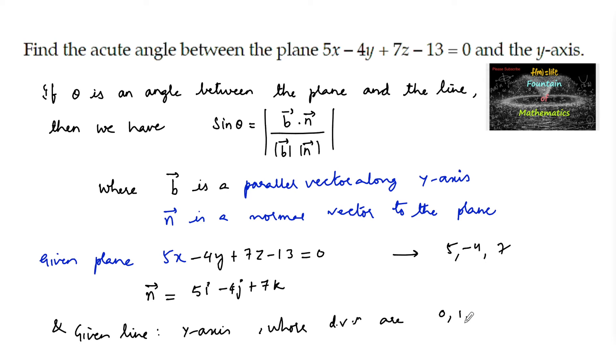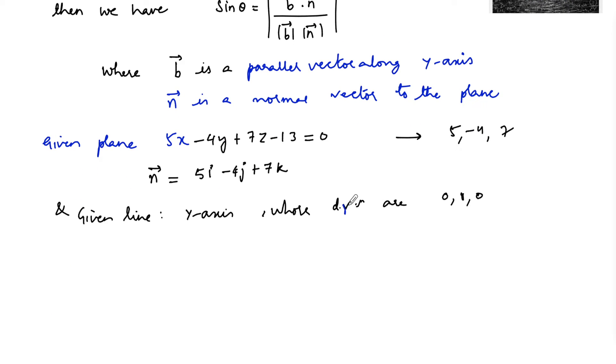The direction ratios we can consider as 0, 1, 0, so that the parallel vector can be considered as b vector equals 0i + j + 0k, which is just j.